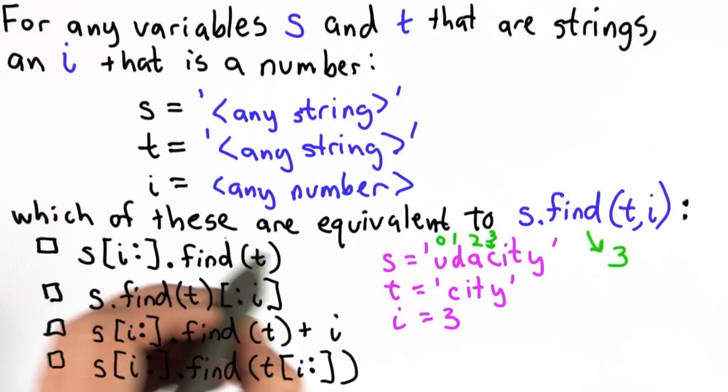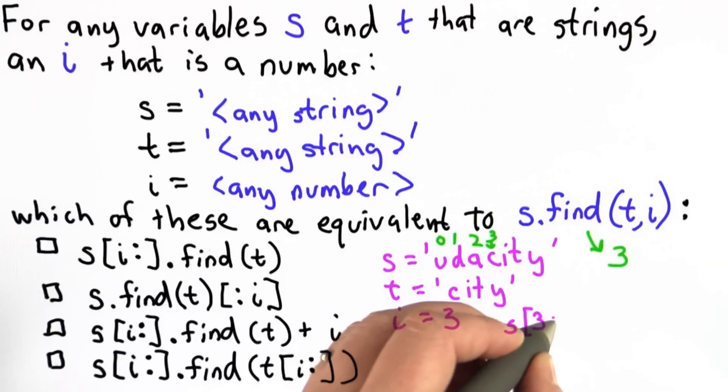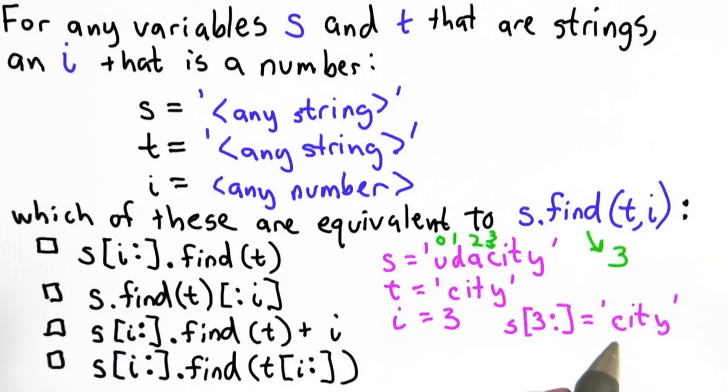So the first one, s[i:].find(t), where i is 3, is going to be this string. So when we do the find where that's the string, we find city at position 0, and the result of this is 0. That's not the same as the result we expect, which is 3.